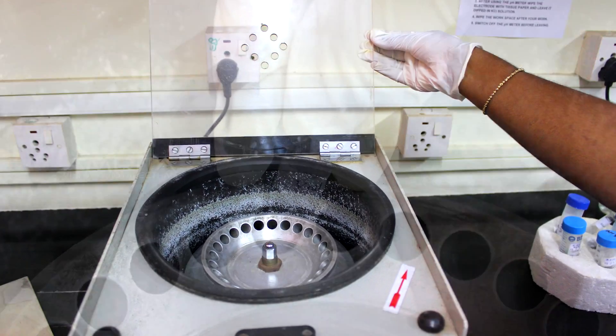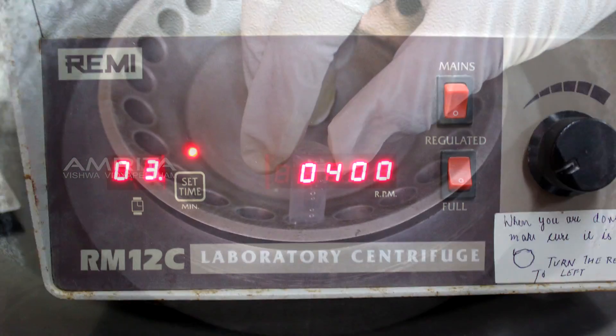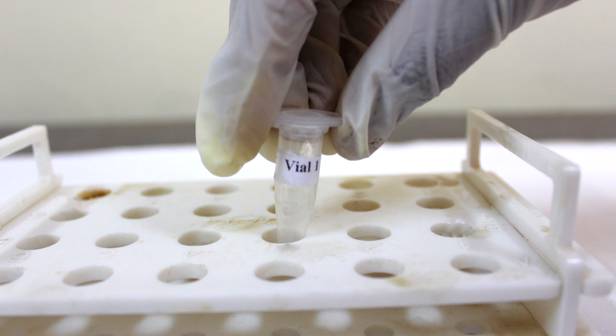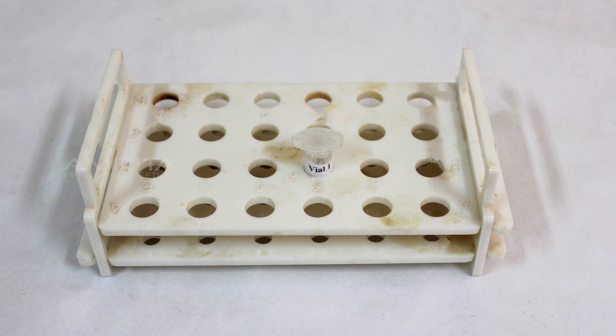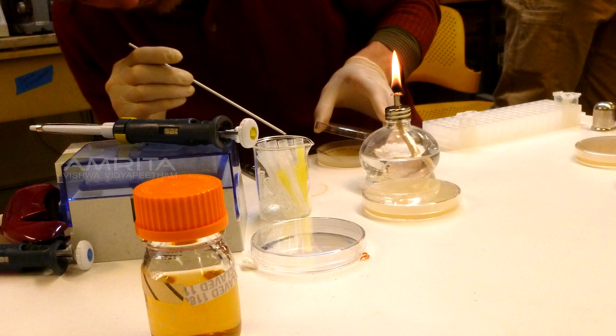Now keep this vial in the microcentrifuge and spin it for a few seconds along with the balancing tube. Then remove the vial from the microcentrifuge and place it in a vial rack and incubate the vial for 2 hours at room temperature. After 2 hours, the ligated mixture can be used for transformation.